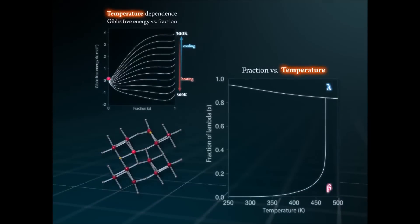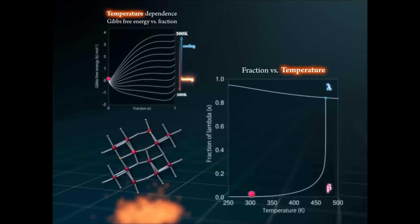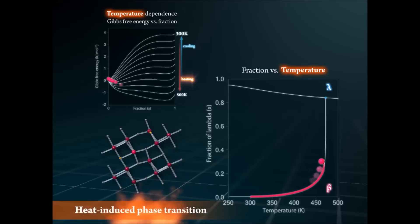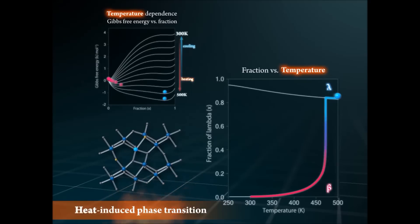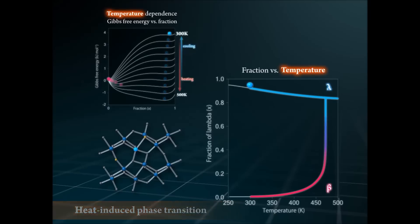Next, the heat storage process and the pressure-induced energy release process are shown. When beta TI-305 is heated, it transforms to lambda TI-305, accumulating the latent heat energy. The lambda phase is maintained during the cooling process due to the energy barrier in the Gibbs free energy curve.